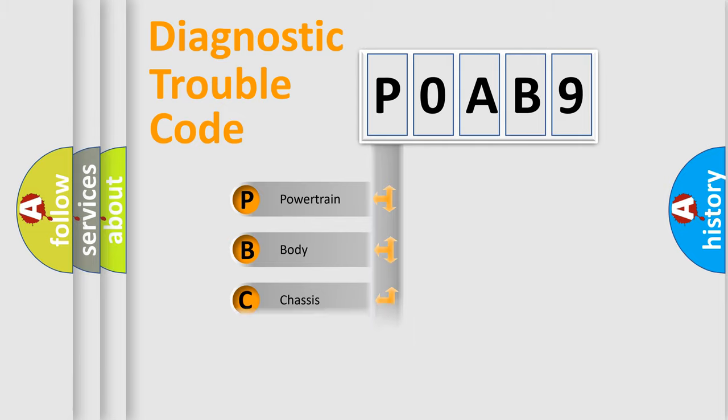Powertrain, Body, Chassis, Network. This distribution is defined in the first character code.